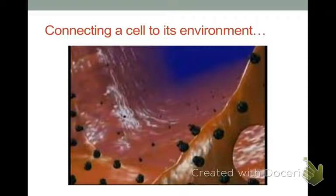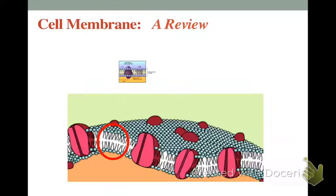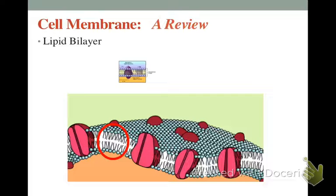The cell membrane helps us with one of the characteristics of life, and it connects this unit with our next unit: cellular respiration. Your cell membrane is a lipid bilayer - right there in the name: lipids. It's a phospholipid bilayer, and you can see in the picture the phospholipid head and tails - a little circle with tails. That's your lipid bilayer: two layers of it.